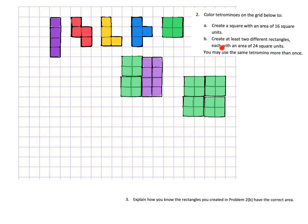And then part B says create at least two different rectangles, each with an area of 24. There's a variety of different ways we could do that. One way is we could just do a bunch of these squares here. One, two, then I could do three, four. And then let's do five, six. So there we go.